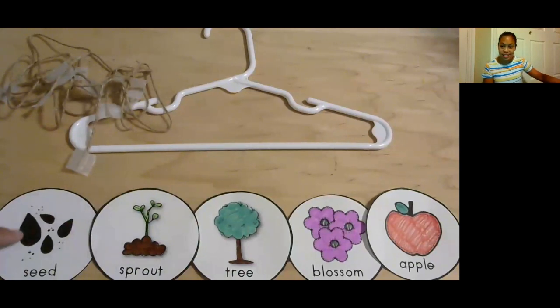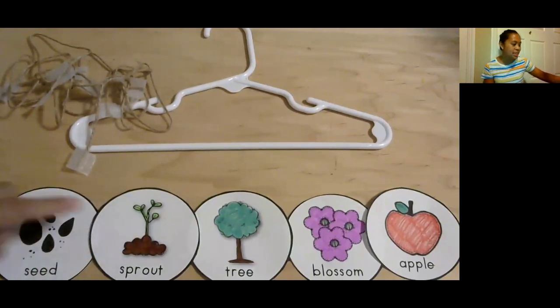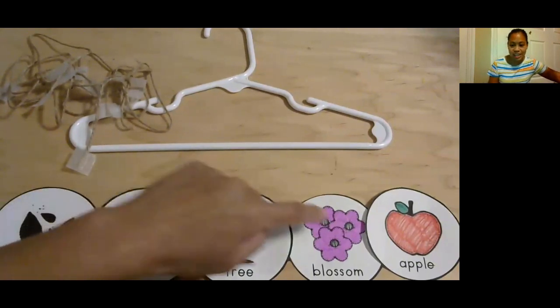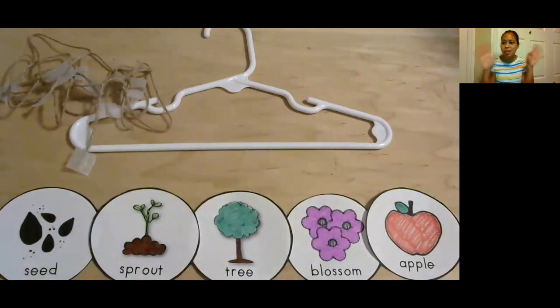So we have the seed, right? If you want to put it in this order, it's kind of nice. It's a good reminder. Seed, sprout, tree, blossom, and apple. But if you want to make some and put them in a different order, that's fun too because that way you learn all the different steps in the life cycle of an apple.